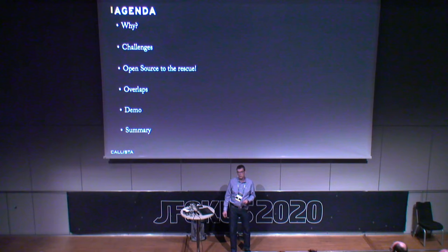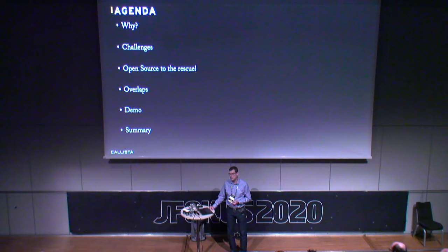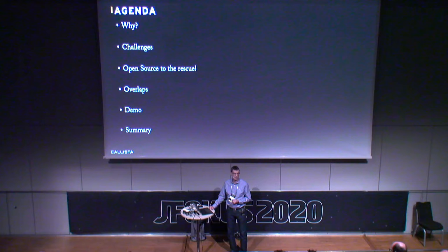I would like to start by reminding us why we want to use microservices, so we don't forget that. Then I want to go into the challenges that come with cooperating microservices and look into the tools and how they have evolved during the last few years. After that, I would like to focus on the functional overlaps and reason about how to handle them. Then I'll end the presentation with a demo where I show how the tools can be used together in a good way.